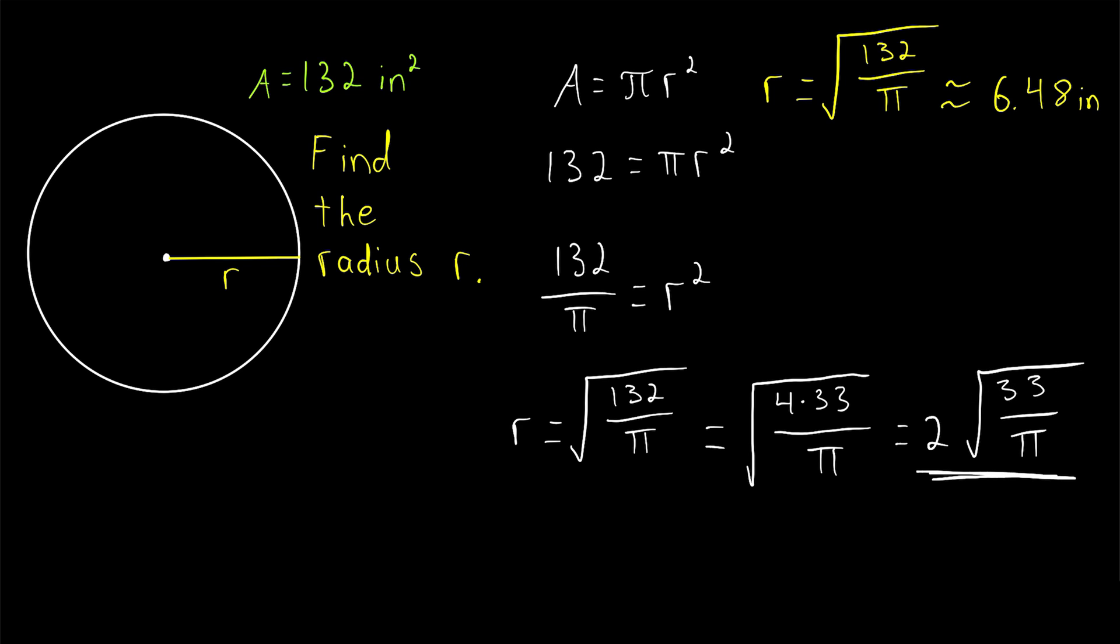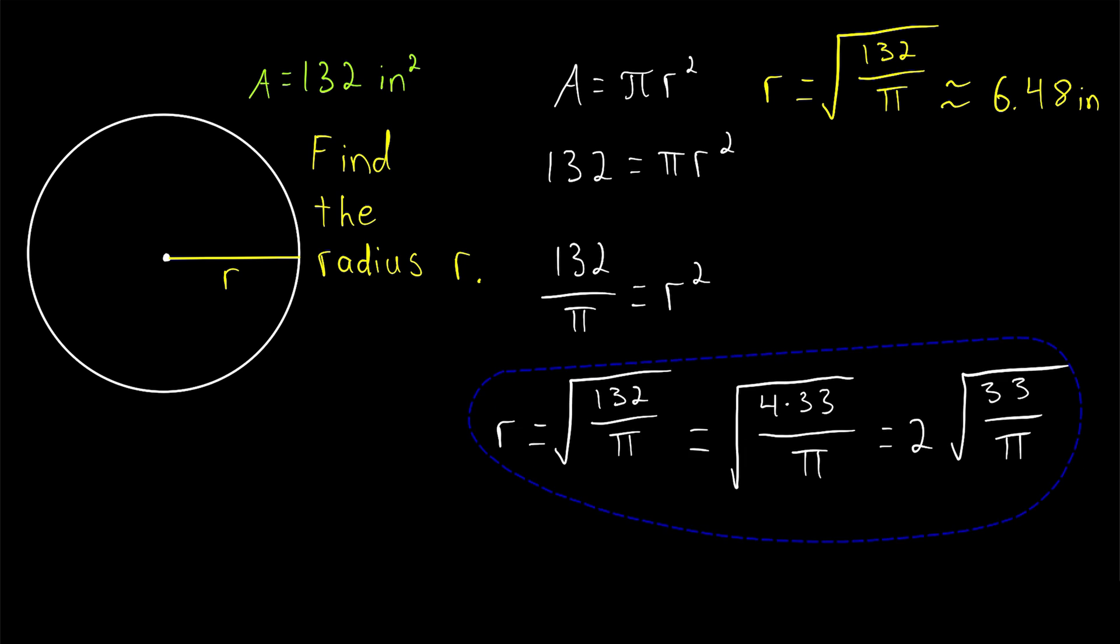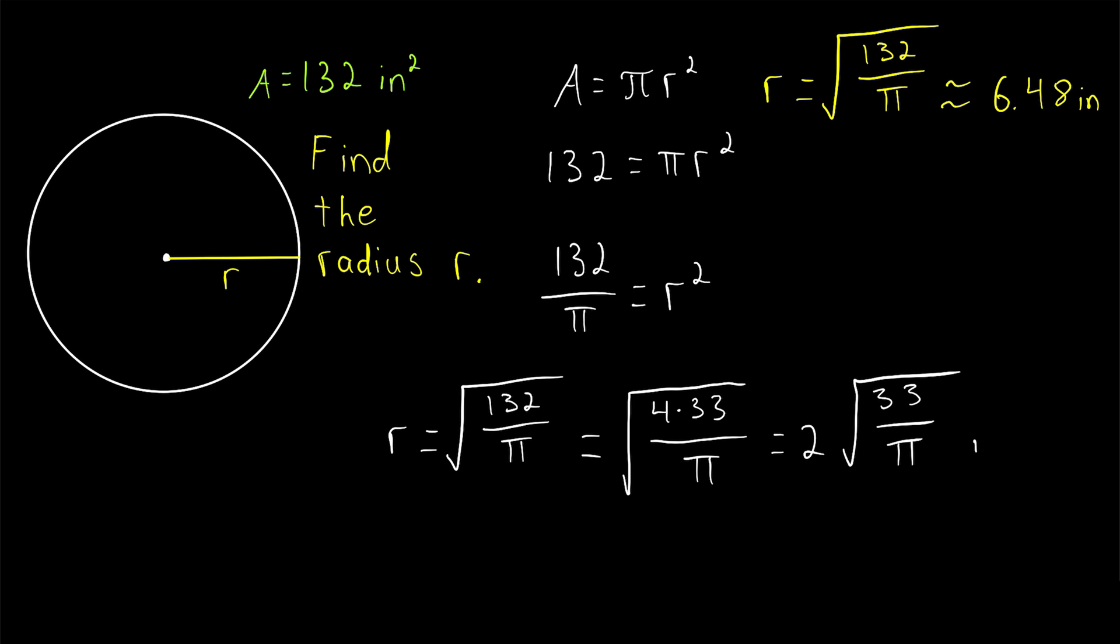And this is fully simplified. There's nothing more that we can do. So, this is our answer in exact and simplified form: 2 times the square root of 33 over π inches. And remember, once we find the radius of a circle from the area, we could just double our answer in order to get the diameter.